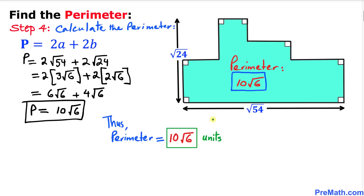Thus the perimeter of this given shape turns out to be 10 times square root of 6 units. Thanks for watching, and please don't forget to subscribe to my channel for more exciting videos. Bye!